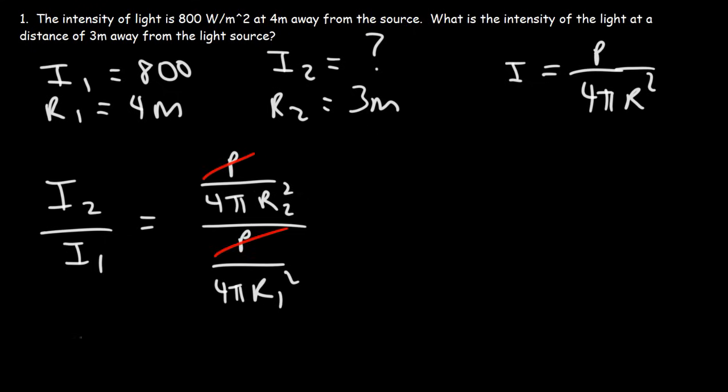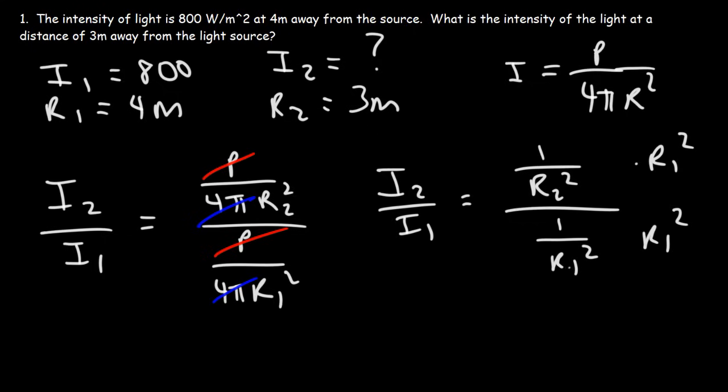So we could cancel P. And thus, we're going to get I₂ over I₁, which is 1 over... We could also cancel 4π. So this is 1 over r₂² divided by 1 over r₁². Multiplying the top and the bottom fraction by r₁², we get this formula. I₂ over I₁ is equal to r₁² over r₂².